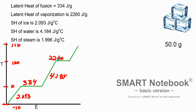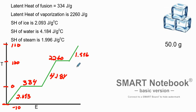When the water boils, we'll be using the latent heat of vaporization, which is 2260 joules per gram. This is the energy going in just to boil it, and the 334 is the energy going in to melt it. When we're heating the steam, we use the specific heat of steam, which is 1.996.